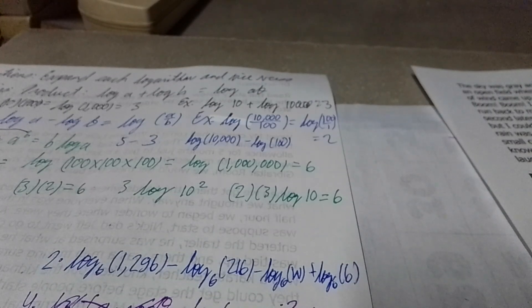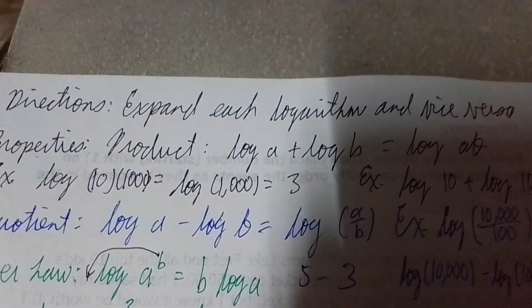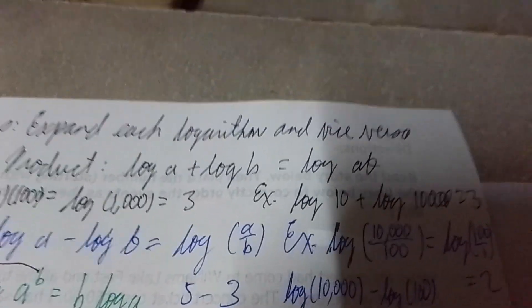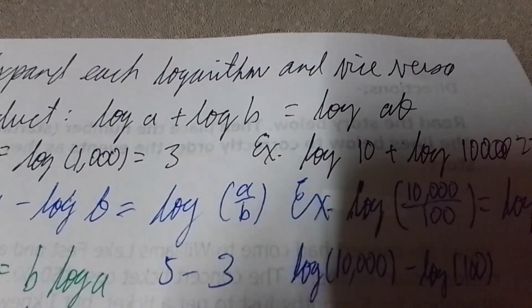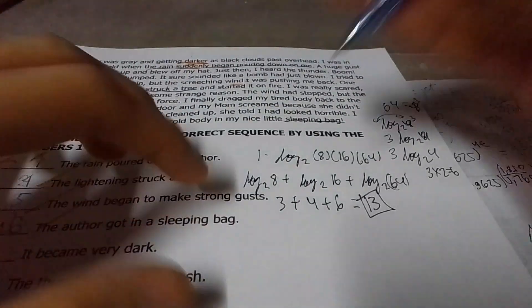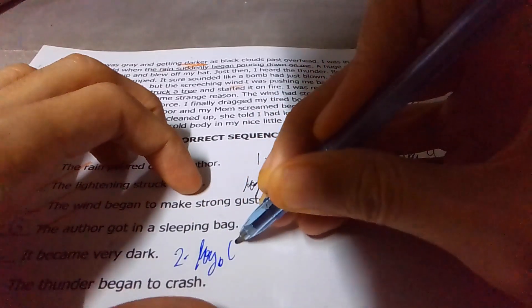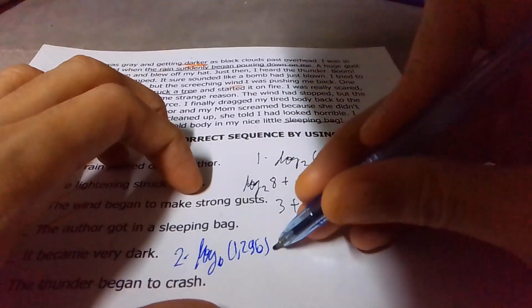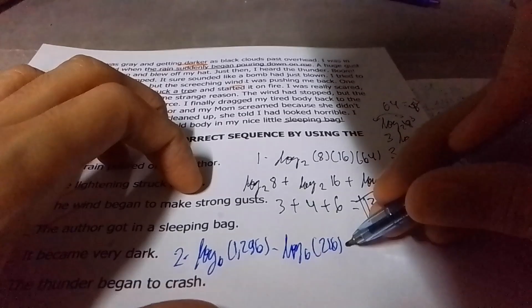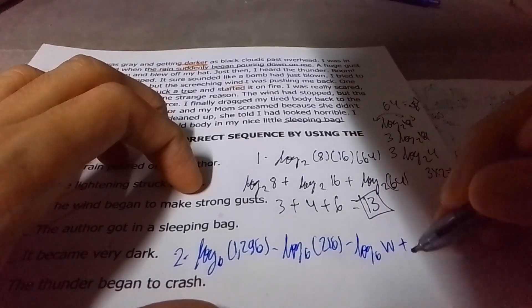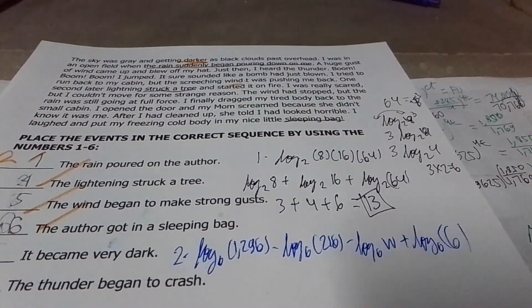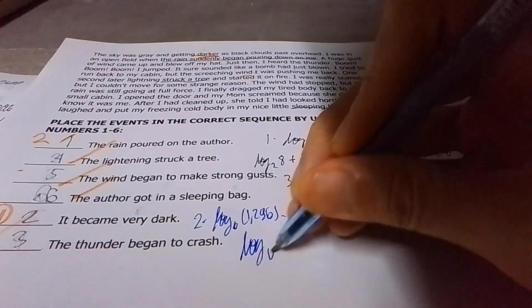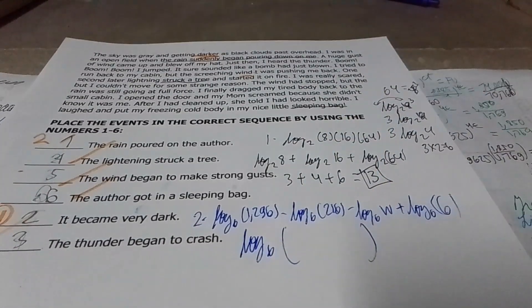This is the quotient law. When doing the quotient law, log of A minus log of B — whatever is the minus goes in the denominator. So we're writing this as one single log. The numbers that are positive go in the numerator; those that are negative go in the denominator.